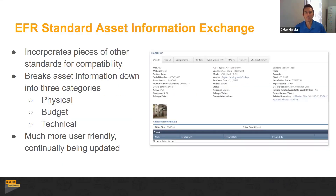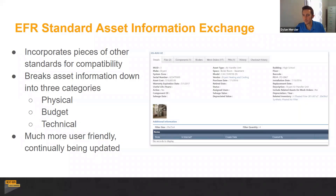So EFR Standard asset information exchange takes the best pieces of information from the different standards and rolls them into one. We break it into three overall categories. The first is your physical data points, which are typically the things directly related to an asset — make, model, serial, really the basic information, description of it, and the area that it's located in.